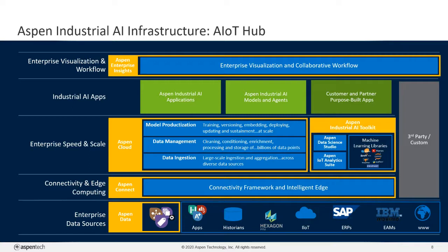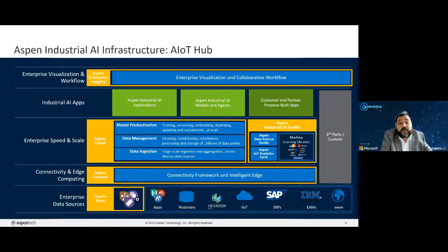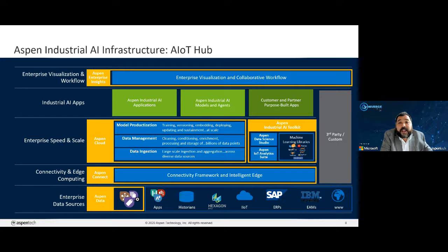Our applications and solutions will leverage the AIoT hub to enable AI and leverage the cloud for enterprise scale. New industrial AI applications will be developed on top of the AIoT hub, which will also host our SaaS-based applications. The data captured from across the enterprise, from the edge to the cloud, will leverage IP21, the newly launched MES Collaborative, and the Aspen Cloud Connect to facilitate applications at enterprise scale.